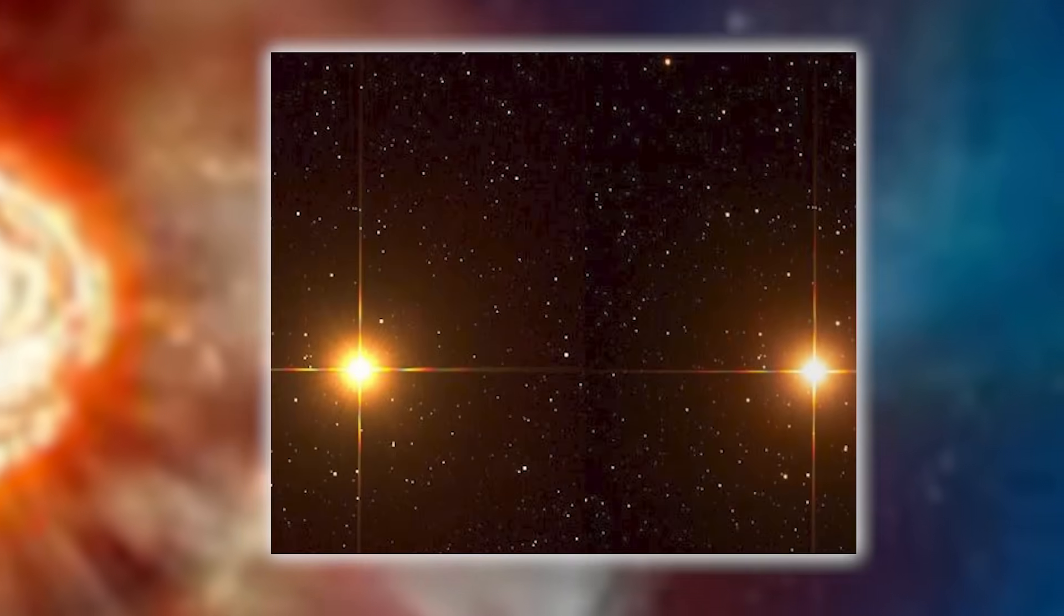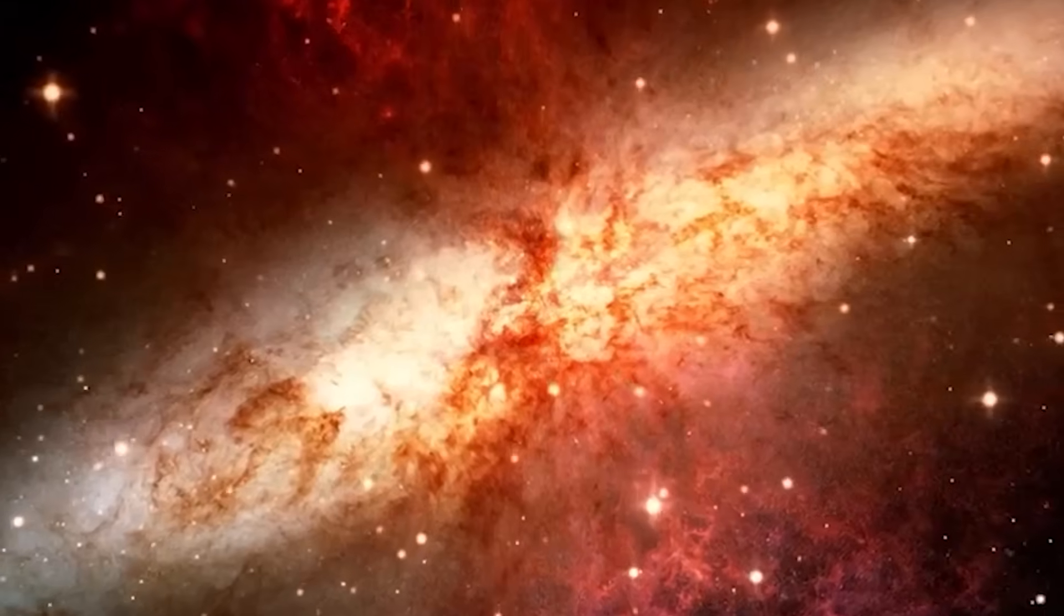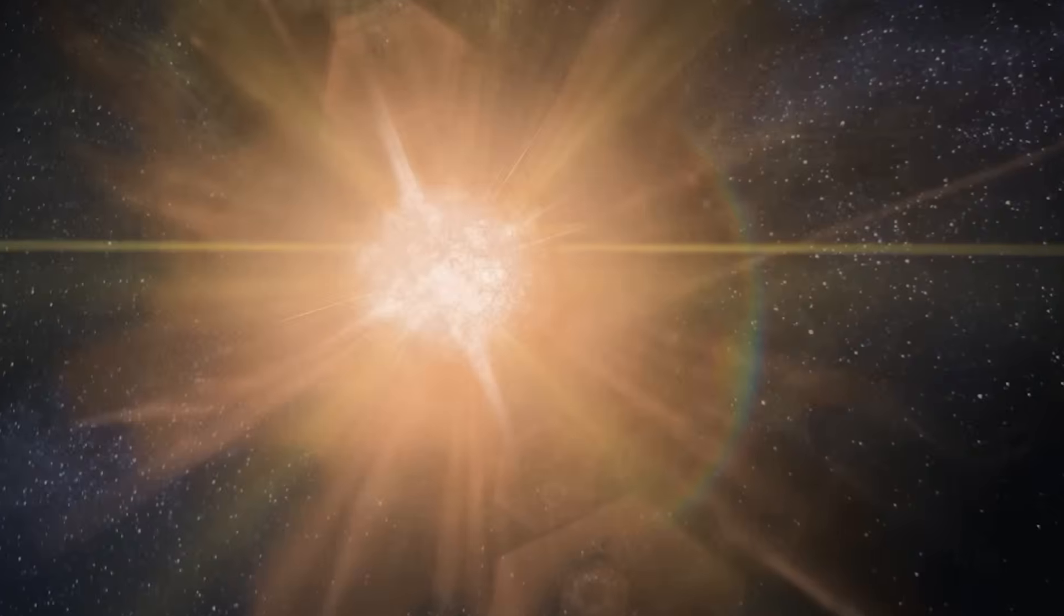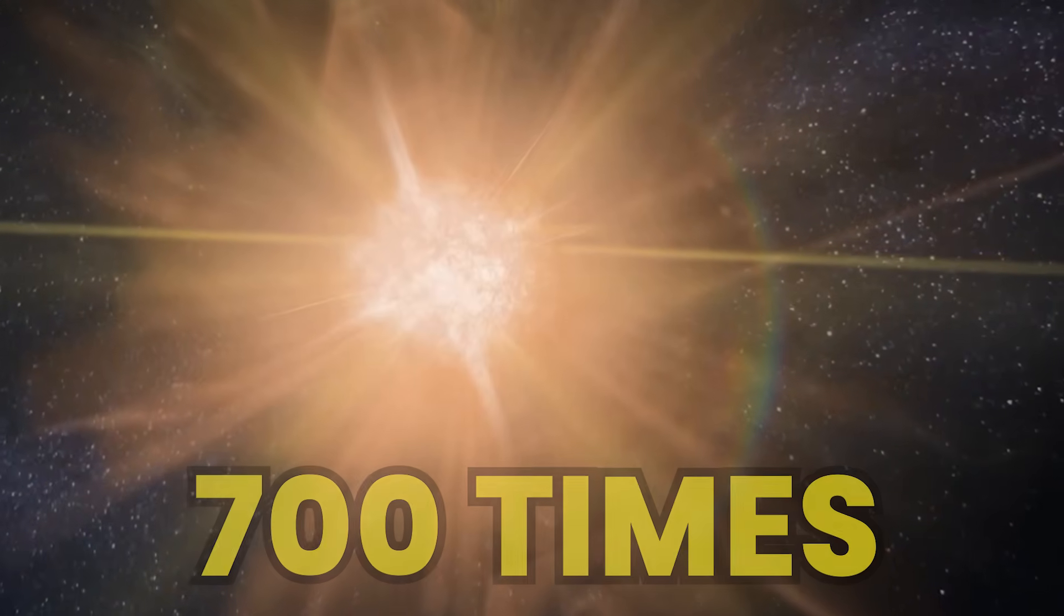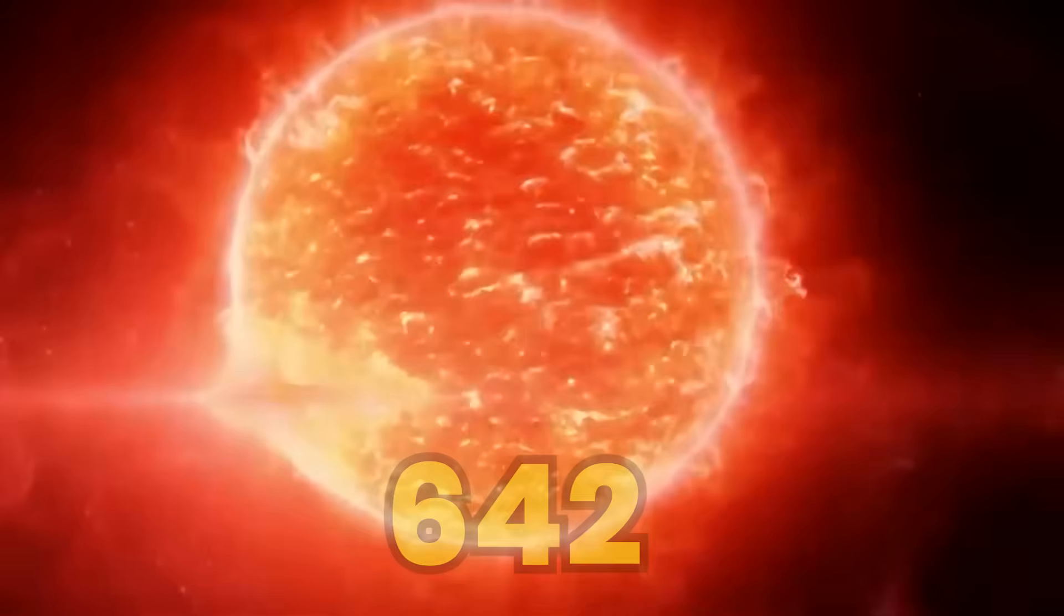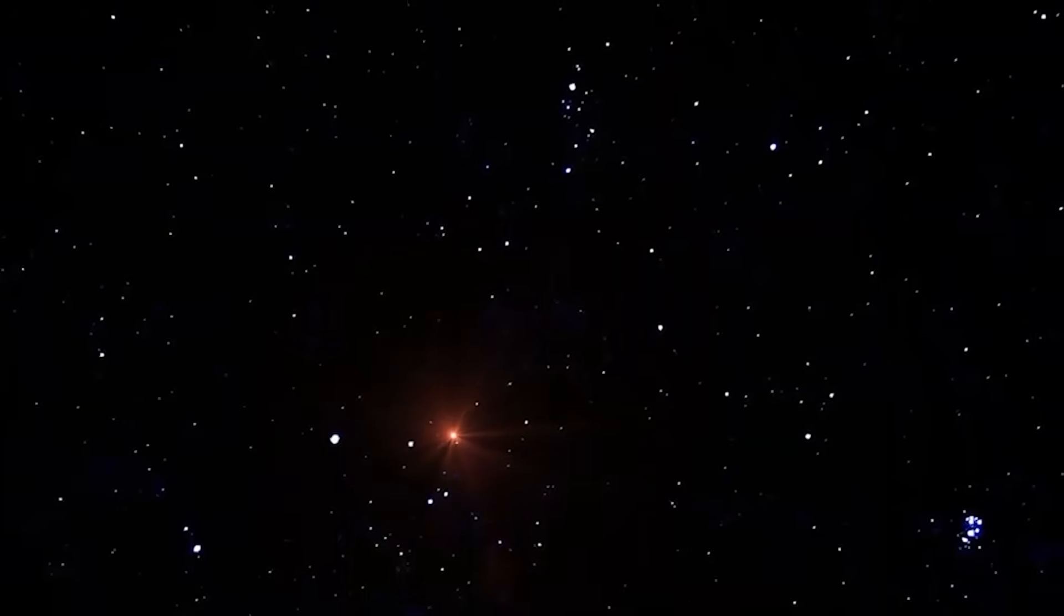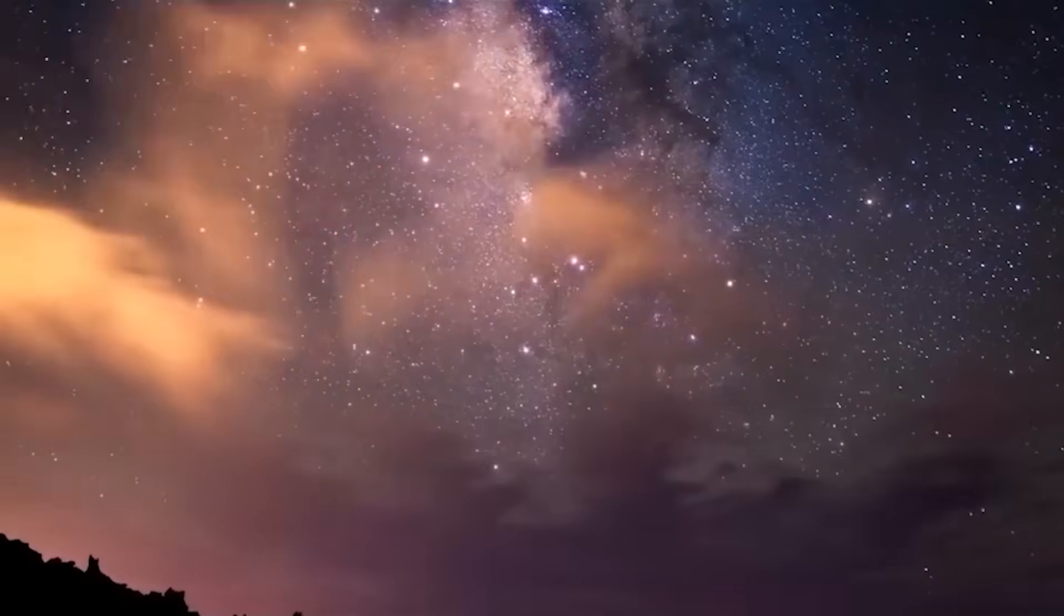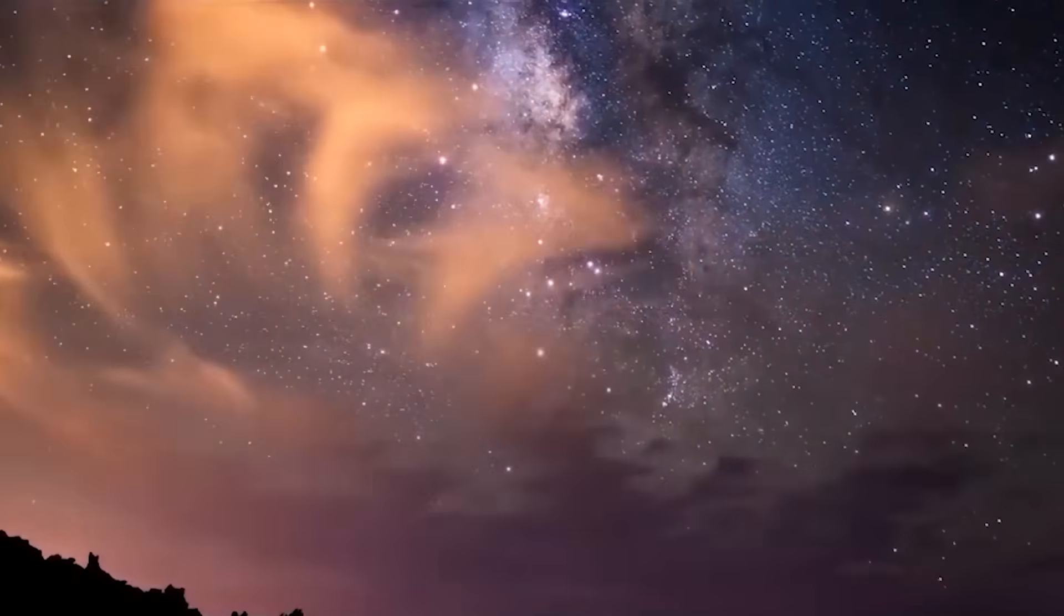Betelgeuse has always stood out in the night sky, a reddish glimmer on Orion's shoulder, captivating astronomers for centuries with its unstable behavior and immense size, about 700 times the diameter of the Sun. Located around 642 light-years away, it is close enough to be one of the brightest stars in the night sky, yet far enough to make its eventual explosion a matter of intellectual interest rather than concern. That narrative has changed.